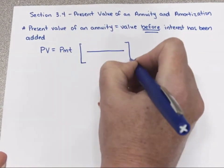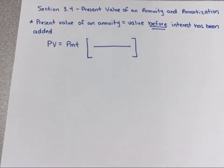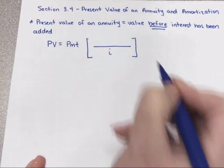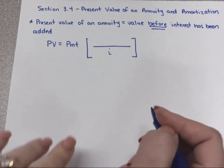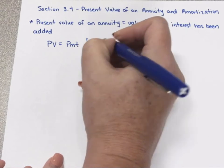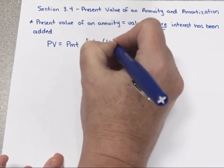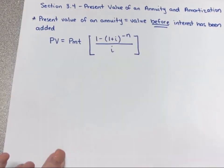You still have a big fraction, and the interest rate still goes on the bottom. Remember the interest rate is not just the rate — it's the rate divided by the number of frequencies, or how many times a year. On the top you have: one minus, parentheses, one plus i, to the negative n power.